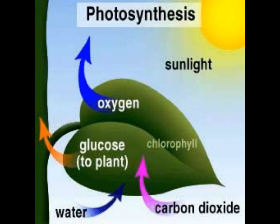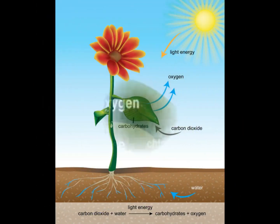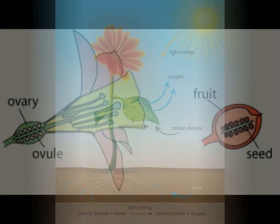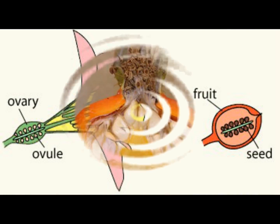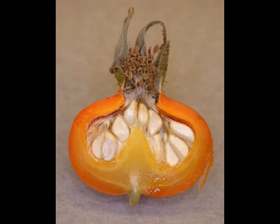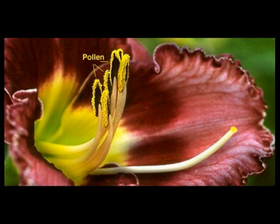Plants also breathe through their leaves, taking in carbon dioxide from the air and giving out oxygen. The flower produces the seeds and contains the pollen.